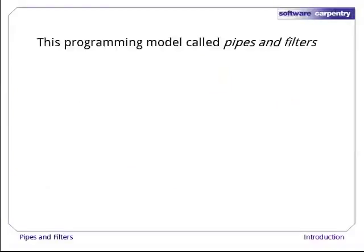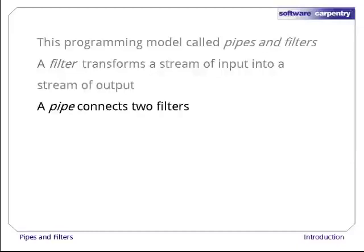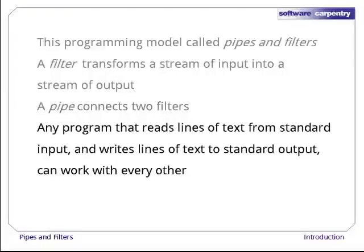This programming model is called pipes and filters. A filter is a program that transforms a stream of input into a stream of output. Almost all of the standard Unix tools can work this way. Unless told to do otherwise, they read from stdin, do something to what they've read, and write to stdout. A pipe is just a connection between two filters. The key is that any program that reads lines of text from standard input and writes lines of text to standard output can work with every other program that behaves this way as well.